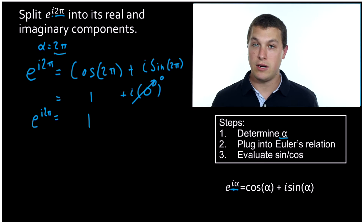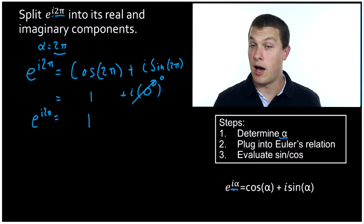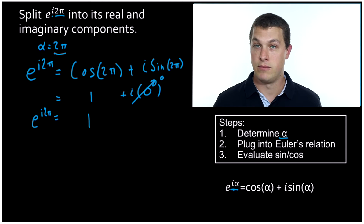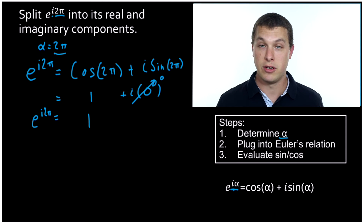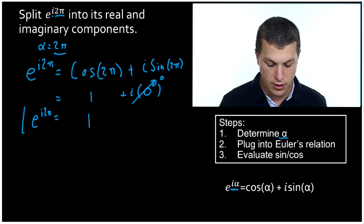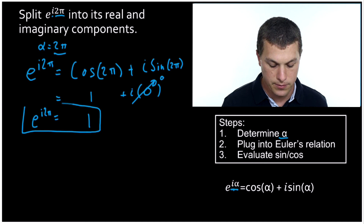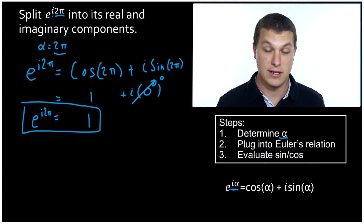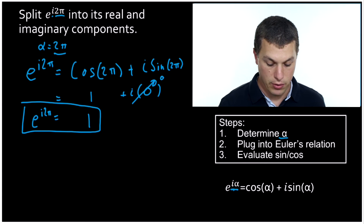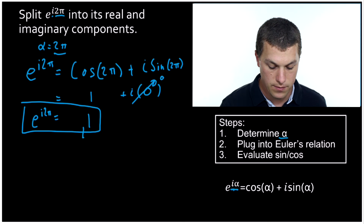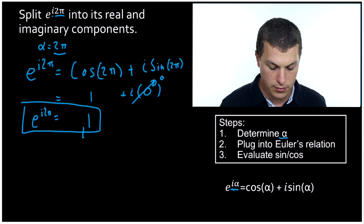So what originally looked like a complex number — because it had the letter i in it, a mixture of real and imaginary — actually is just purely a real number. E to the i two pi doesn't have an imaginary component. It has a real component, which is one, but no imaginary component.